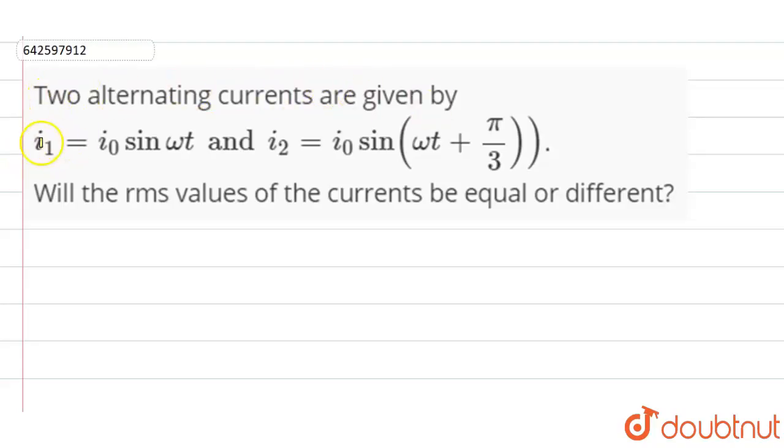Hi, the question is: Two alternating currents are given by i₁ = i₀ sin ωt and i₂ = i₀ sin(ωt + π/3).